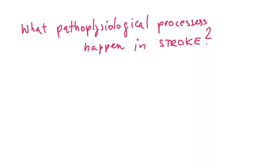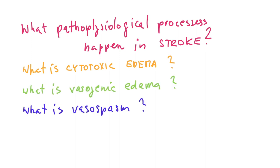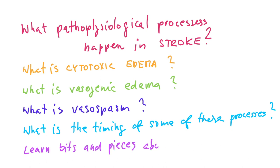Hello and welcome to COILD. Today you're going to learn what pathophysiological processes happen in stroke, what is cytotoxic edema, what is vasogenic edema, what is vasospasm, what is the timing of some of these processes, and learn bits and pieces about treatment.